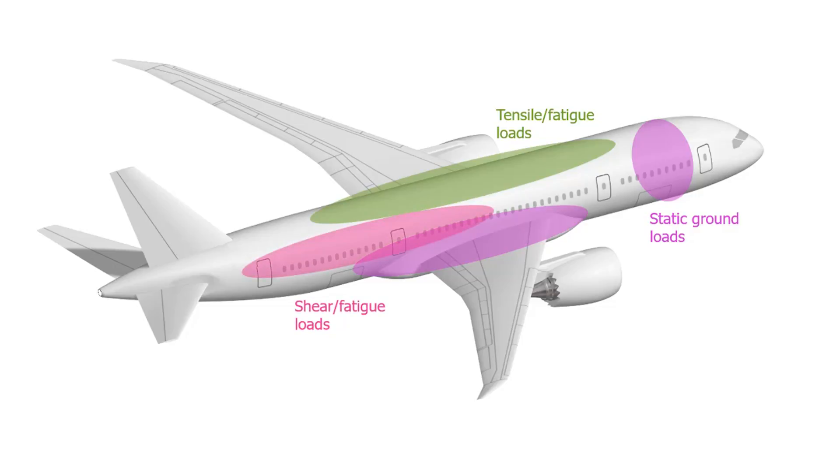We also have the pressurization of the fuselage creating circumferential tension. So the dominant load cases for the top of the fuselage will be tension and fatigue. For the bottom of the fuselage that will be compression which will become critical instability. On the aft side of the fuselage, shear and fatigue loads will be dominant due to the empennage.